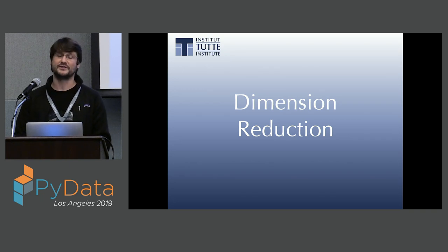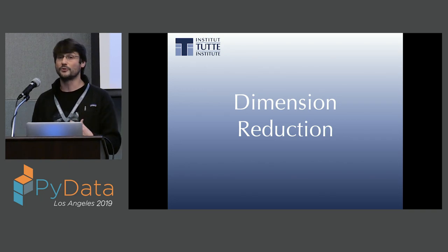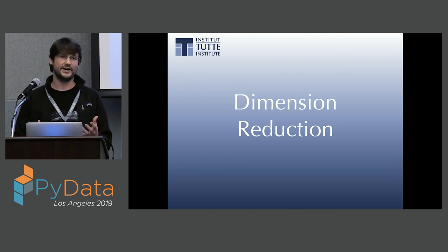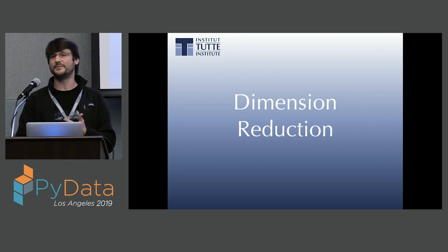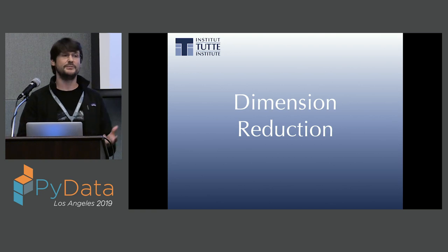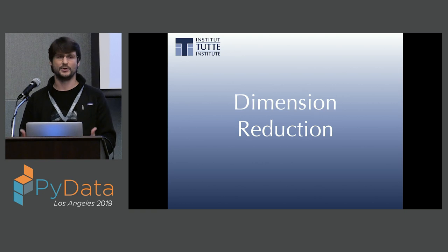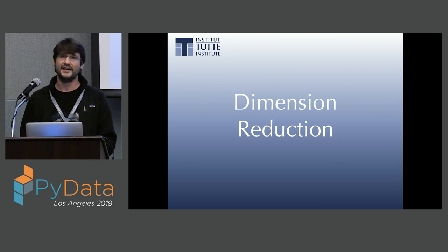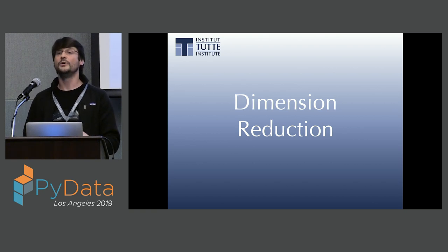Let's start with dimension reduction — a common problem in unsupervised learning. You have very high-dimensional data and want to either visualize it or get it down to a low enough dimension to run clustering or similar techniques, while preserving as much of the data's structure as possible. What do we mean by structure? We're talking about the interrelationships between different data points. And when you talk about interrelationships, you're really talking about topology. So topology is the right mathematics to tackle this problem.